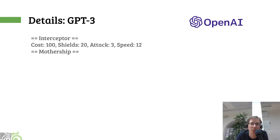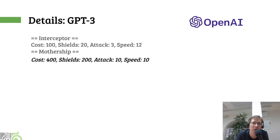GPT-3 can also be used in a more structured way. In this example, imagine I'm trying to define the stats of some units in a game. I give GPT-3 a single example in structured text: an interceptor costs 100 units, it's got 20 units of shields, attack value is 3, and speed value is 12. Now, tell me what would Mothership have as its stats? What came out was actually quite reasonable — the Mothership is much more costly than the interceptor, much more bulky, more powerful, and somewhat slower. So GPT-3 can be used even with structured output, making it quite powerful.